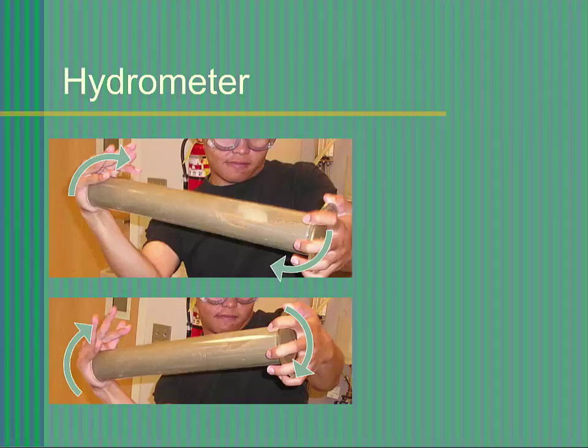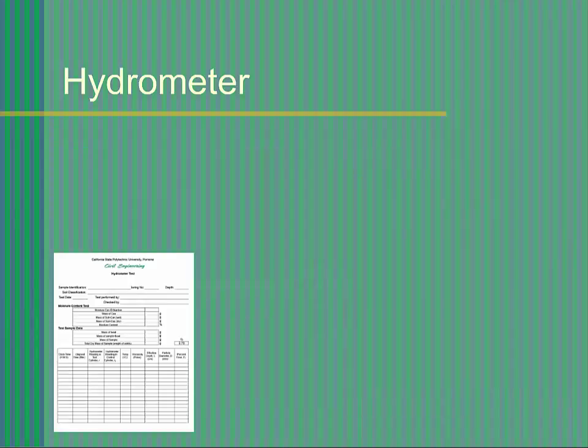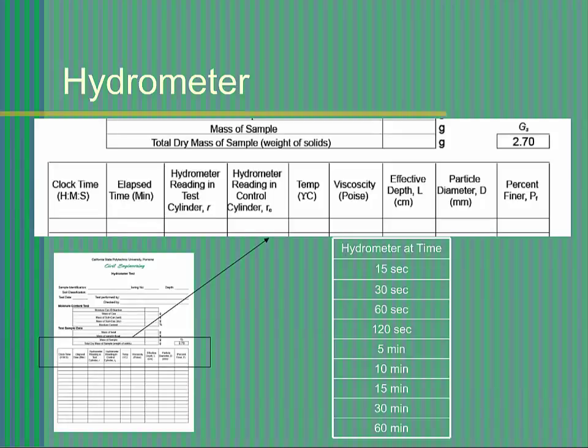Once all the soil is in suspension, place the test cylinder upright on a table. As soon as the cylinder has been placed upright, the soil particles begin to settle to the bottom. Carefully insert the hydrometer. You must take a series of measurements over a period of at least one hour. Follow the lab manual.